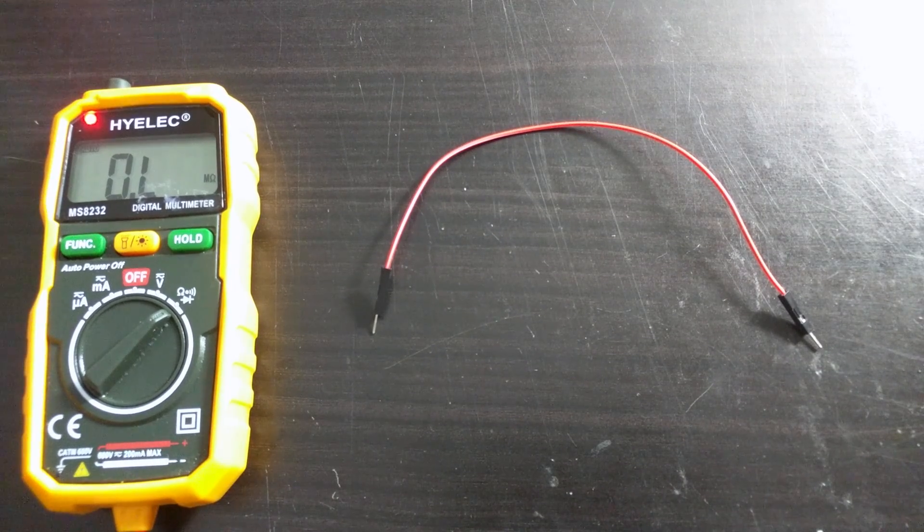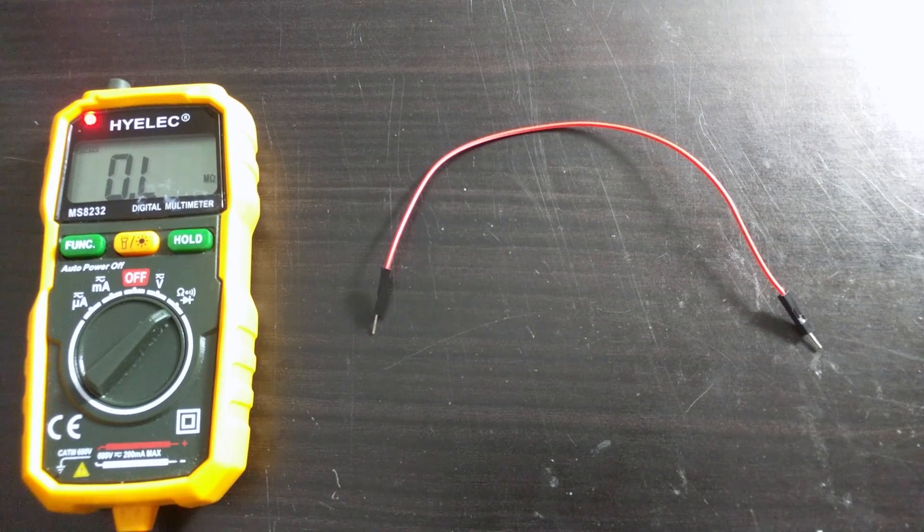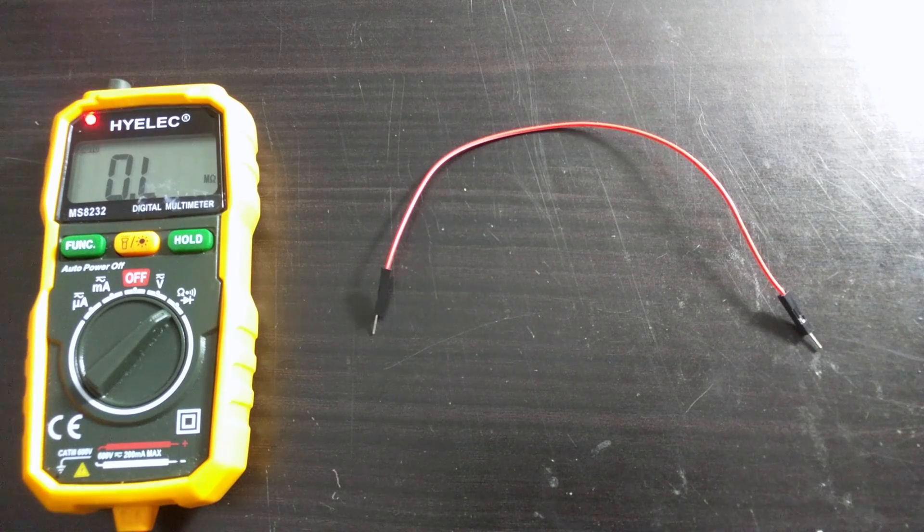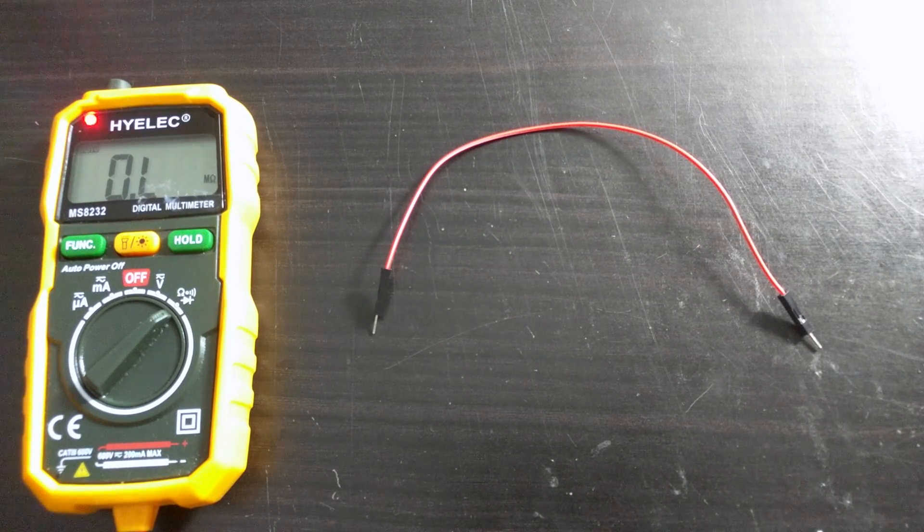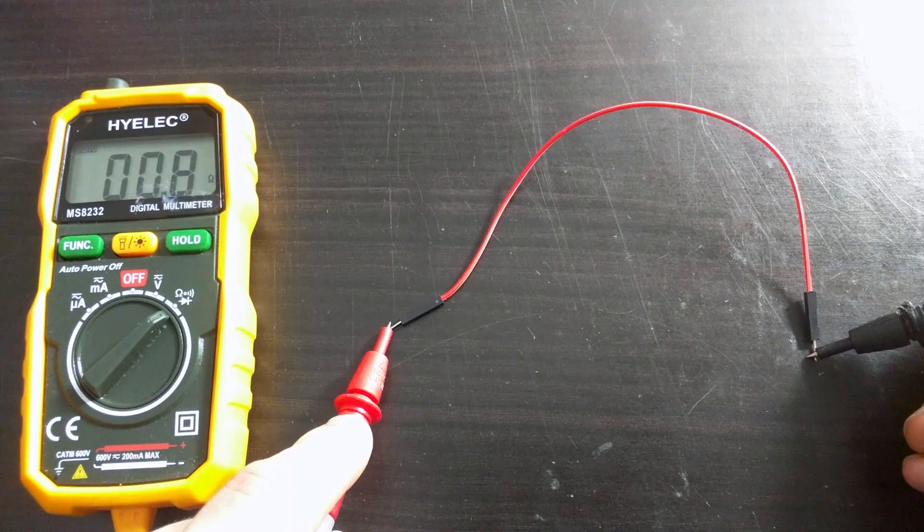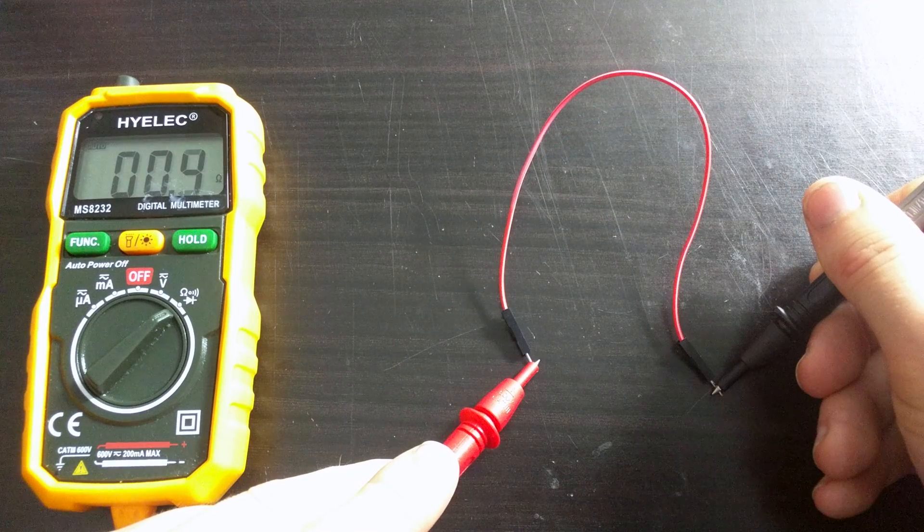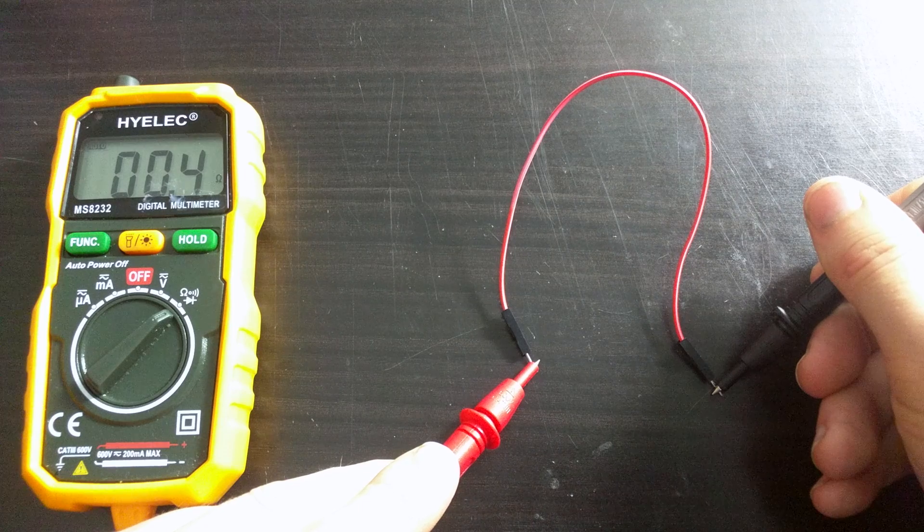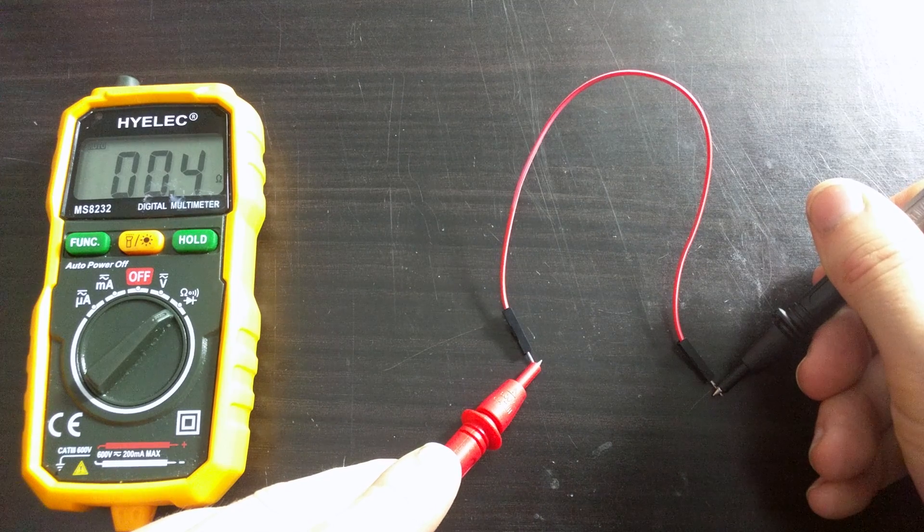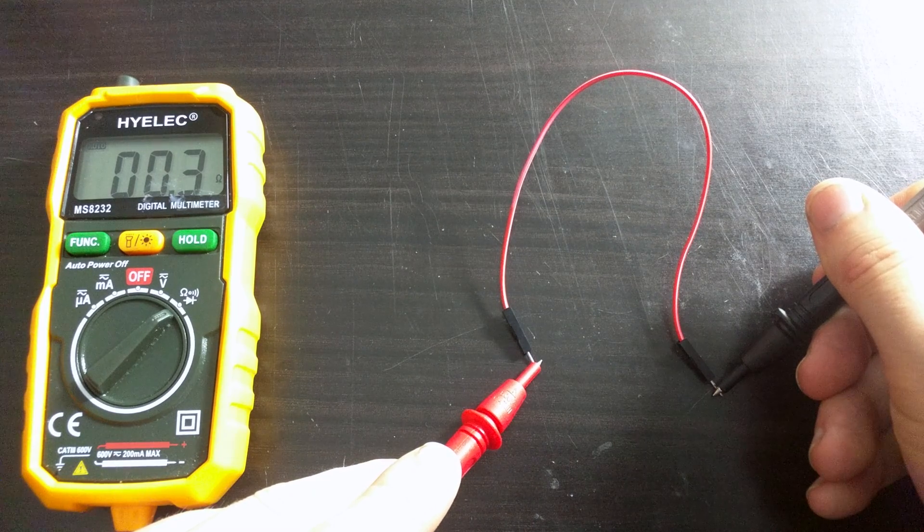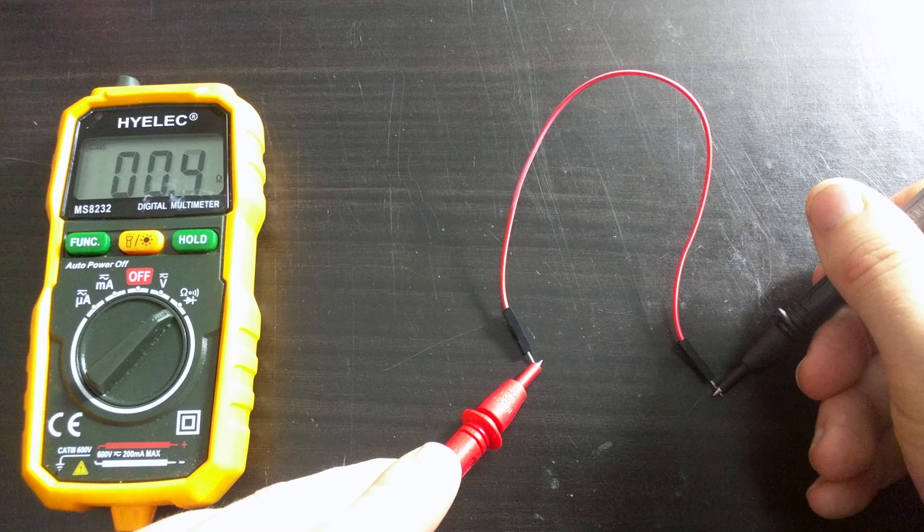When we talk about measuring continuity, we are talking about measuring very low resistance, which enables us to ensure that we have a good connection in a circuit. Across this wire, it should show very low resistance. As you can see, the resistance of this wire is less than half an ohm, a very good connection across this entire wire. This means that I have good continuity.